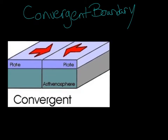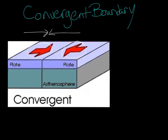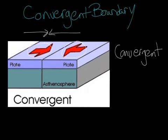Here we have what we call a convergent boundary. If you look closely at this picture of this convergent boundary, you see that the two arrows are going towards each other — they're coming together and both pointing to that same spot. The strategy I like to use for convergent boundaries is 'convergent collide.'